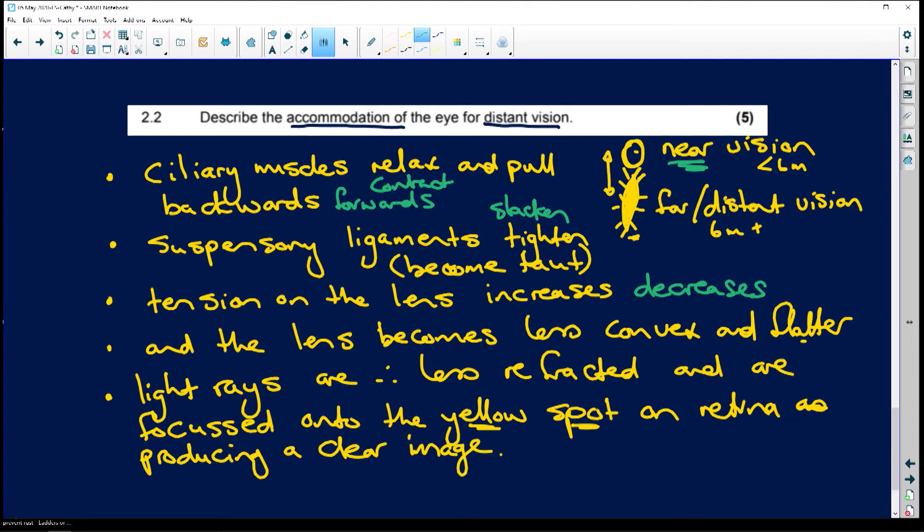And the lens becomes more convex and rounder. You see what I mean by everything being opposite? Light rays are therefore more - because it's rounder - more refracted and are focused onto the yellow spot of the retina, producing a clear image. OK?